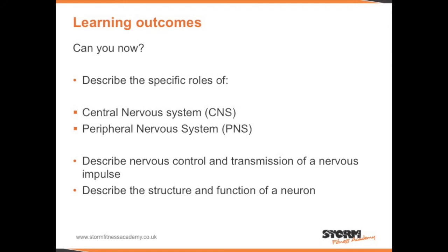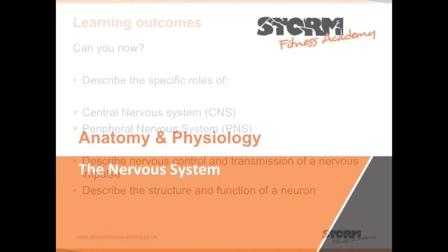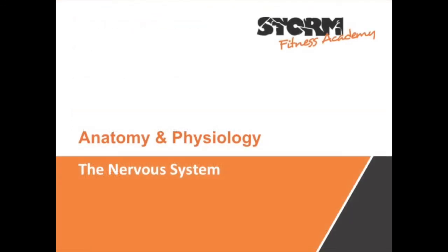Can you now describe the roles of the central nervous system and the peripheral nervous system? Can you describe nervous control and transmission of a nervous impulse? Describe the structure and function of a neuron. For more health and fitness education, visit www.stormfitnessacademy.co.uk.